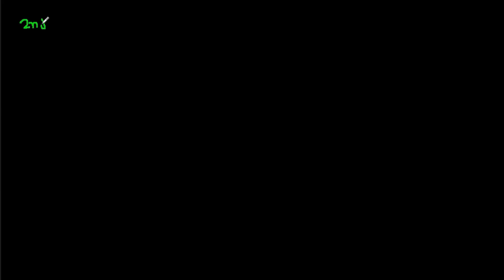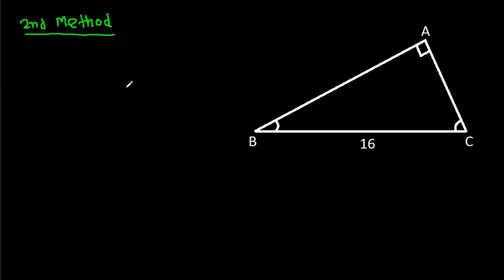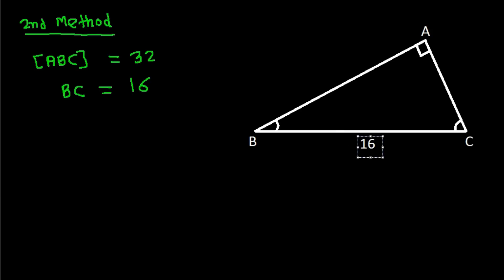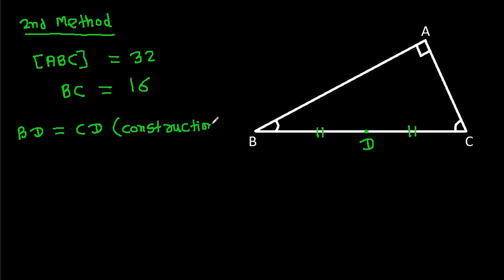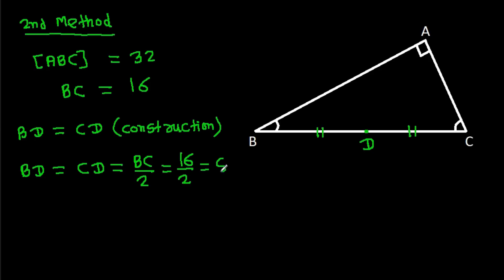Now the second method. We have area of ABC equals 32 and BC equals 16. Suppose D is the midpoint of BC. Then BD equals CD equals BC over 2 equals 16 over 2 equals 8. So BD equals 8 and CD equals 8.